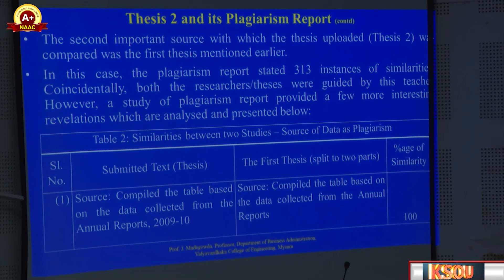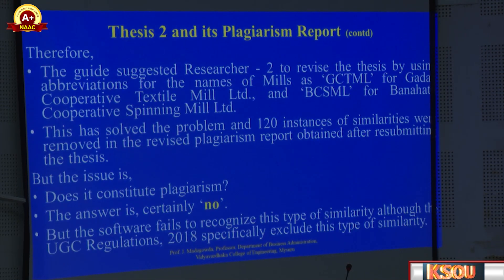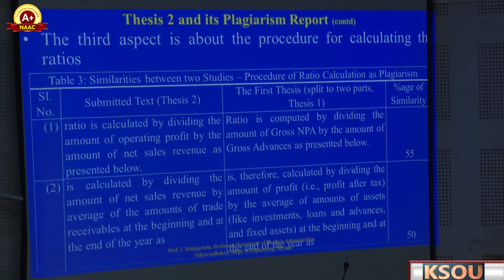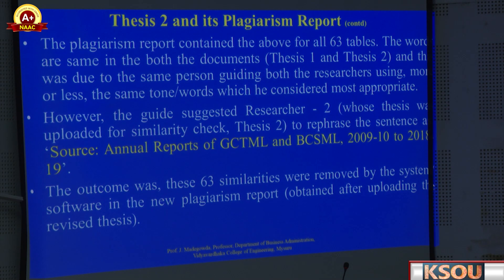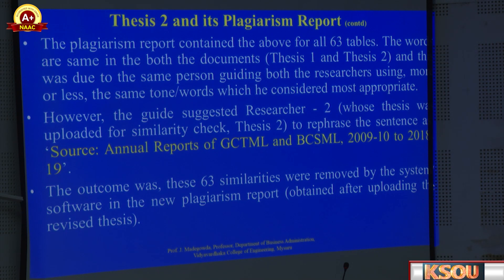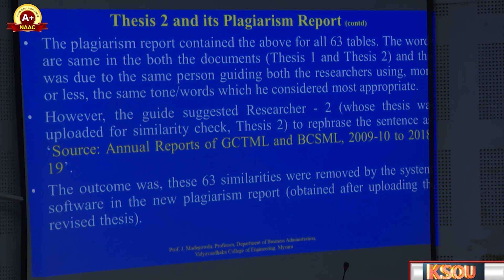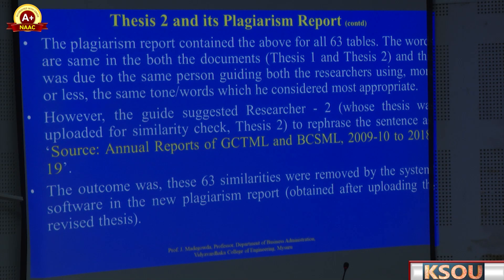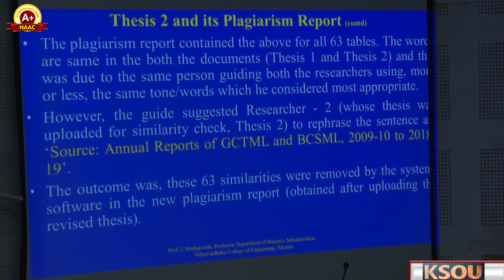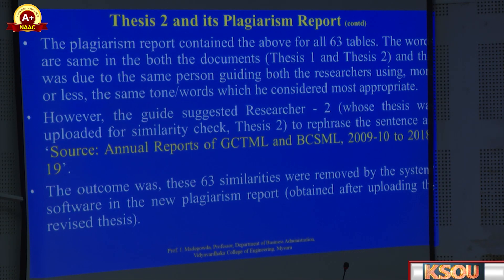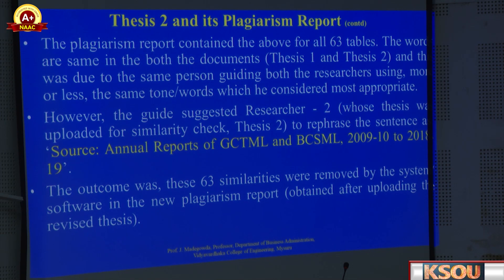To avoid this, we simply changed the source note to: 'Annual reports of GCTML and BCSML, 2018-19.' This removed 63 instances of similarities. In all tables, the similarity was reduced to near zero.